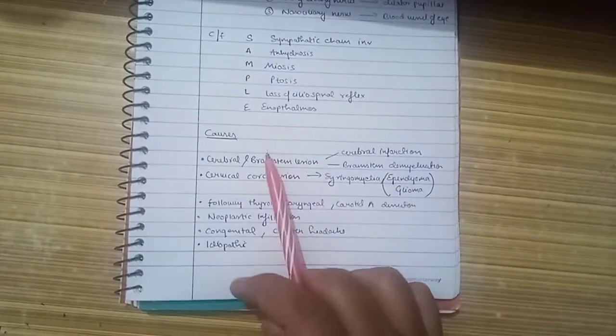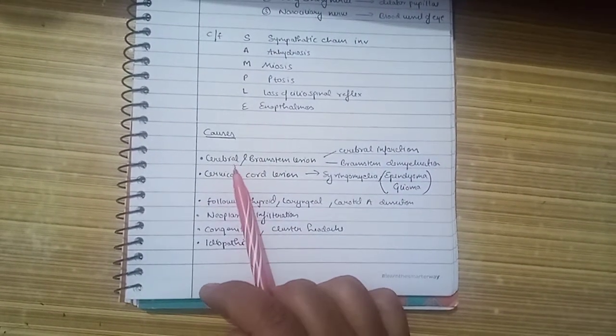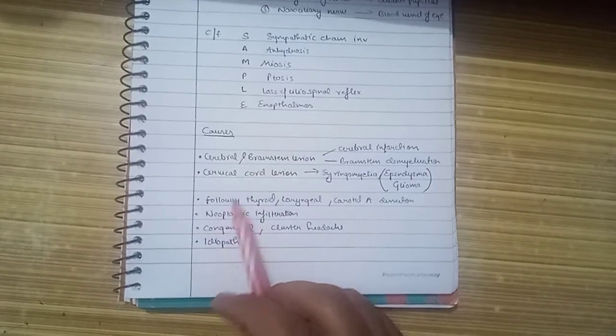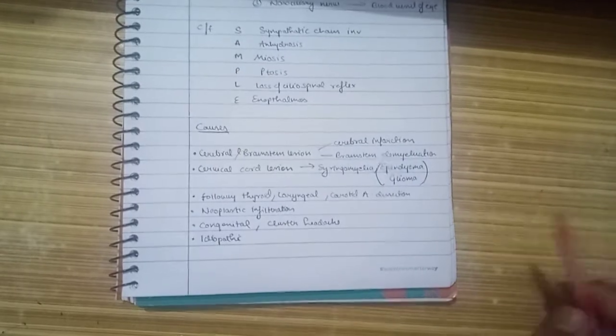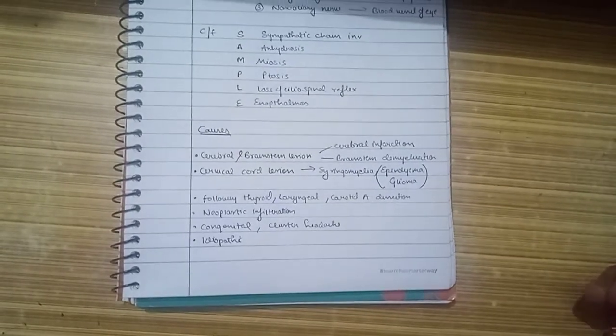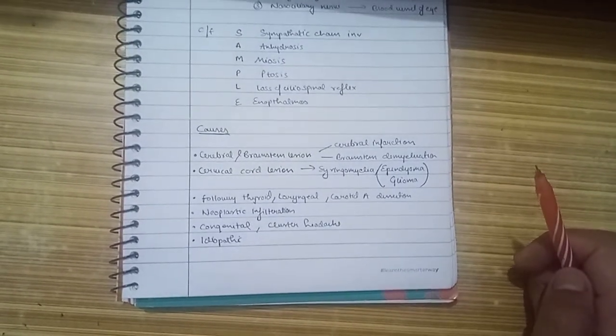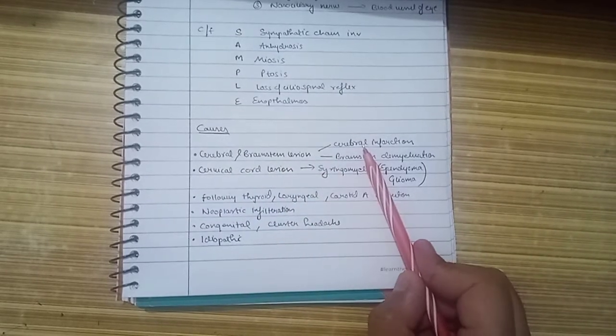The causes involve cerebellar, cerebral, and brain stem lesions. All these lesions or causes somehow disrupt the cervical sympathetic chain leading to the following features.